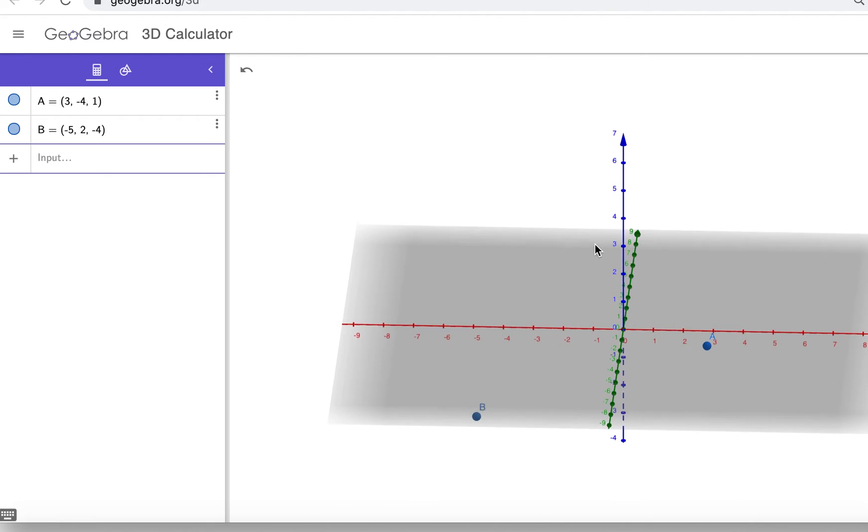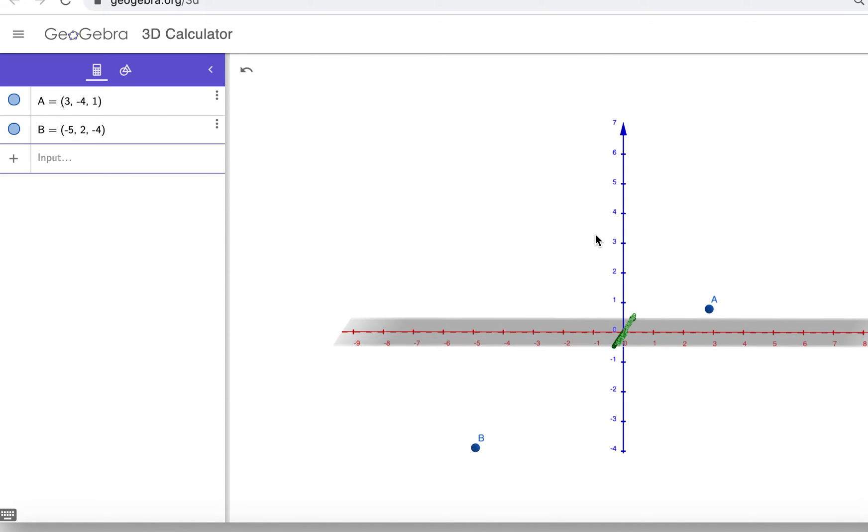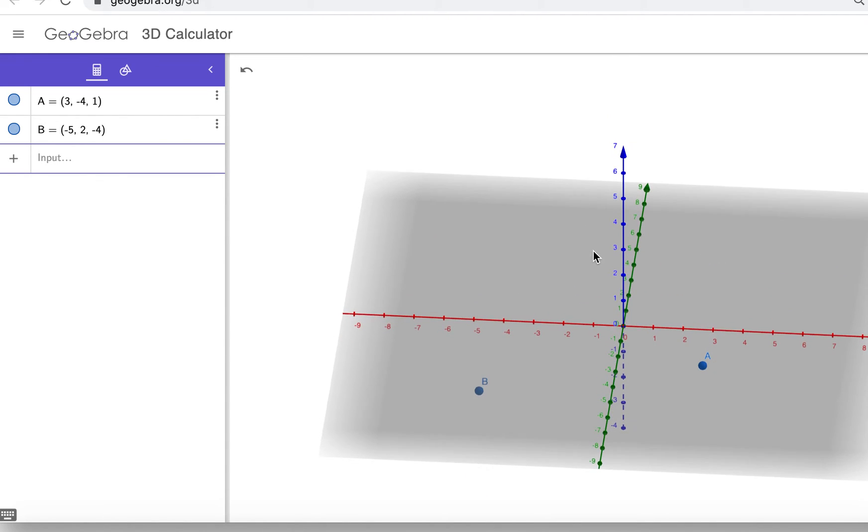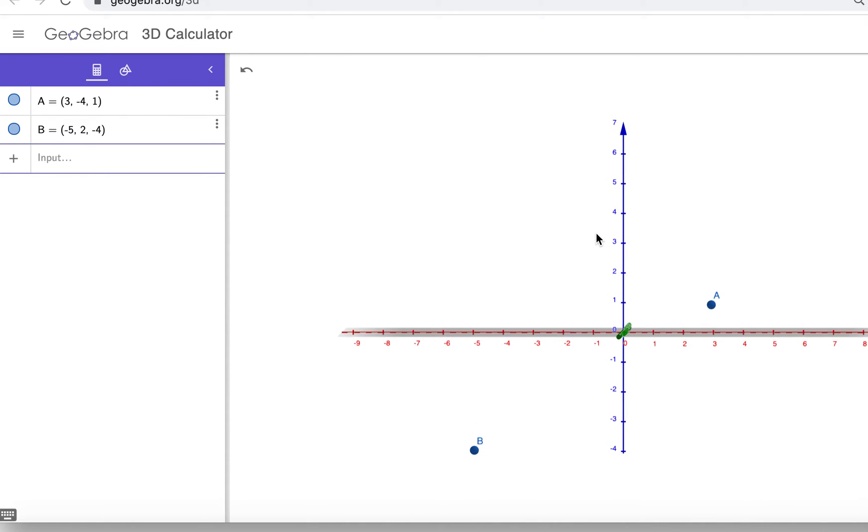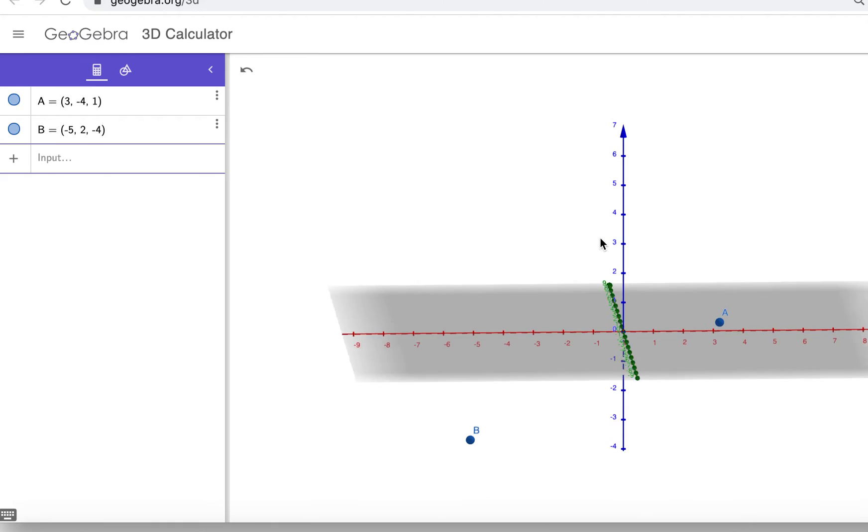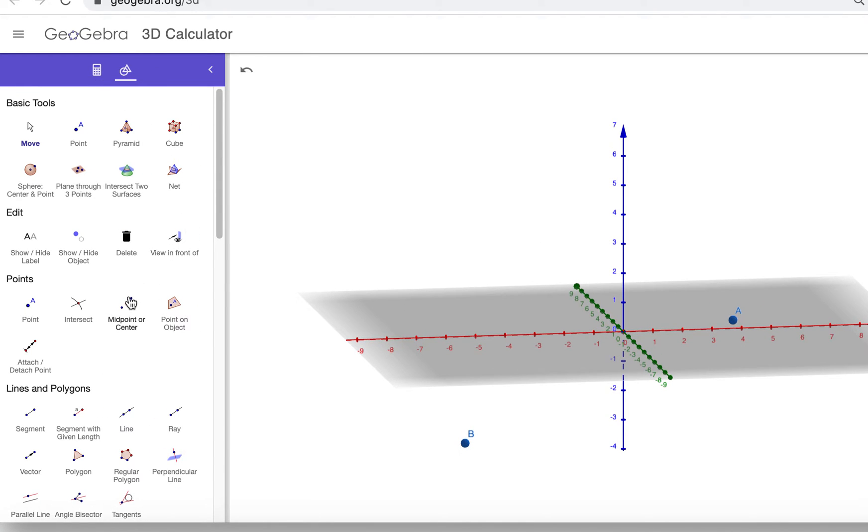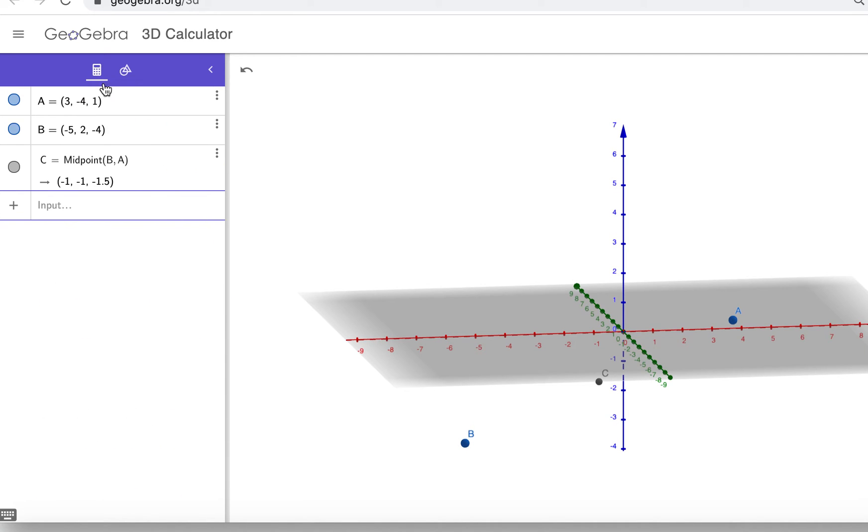And the x axis is the red one. The y axis is the green one. And then the z axis, the one that comes straight up, is the blue one. So if I want to find the midpoint, well GeoGebra has a nice feature here. I can just click midpoint and then it says select two points. So I'm going to select b and a and there it gives me the midpoint just like that.